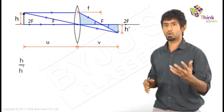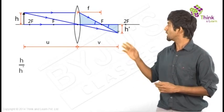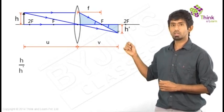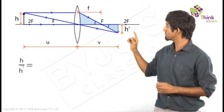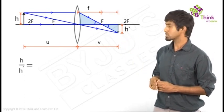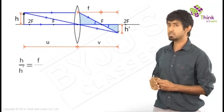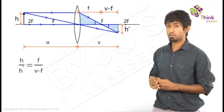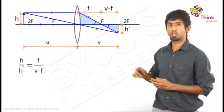If it's H by H dash, it's the object size by the image size. And you write it down there. And what do you get? That's equal to that length by this length. And what is that length? It's just F. And the other length is, that's right, V minus F, because the overall length is V and the smaller length is F.